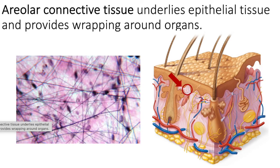Areolar connective tissue is a very loose type of connective tissue. It provides wrapping around organs and surrounds all the blood vessels to keep them in place. When you're dissecting and open up a body cavity, you'll see a lot of areolar connective tissue — it appears to be thin, spider web-like strings of material. Because of its spacious and loose appearance, it's also able to hold water inside of it.